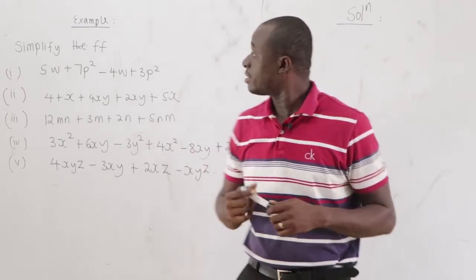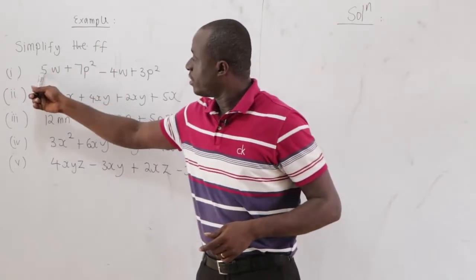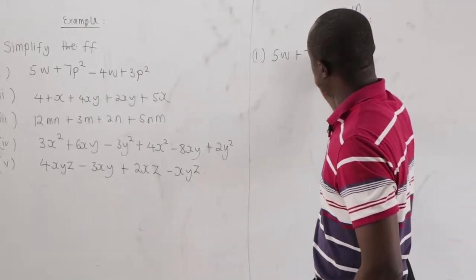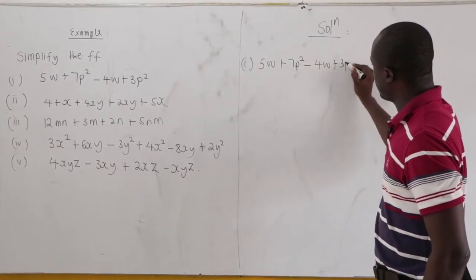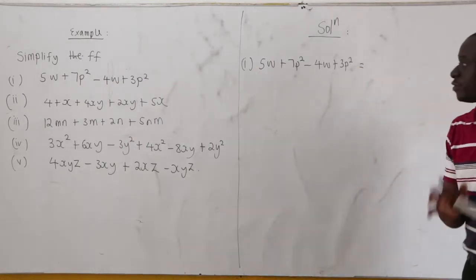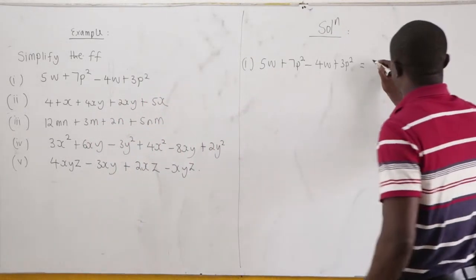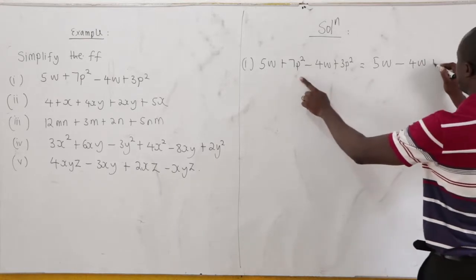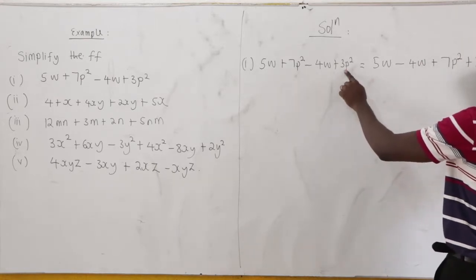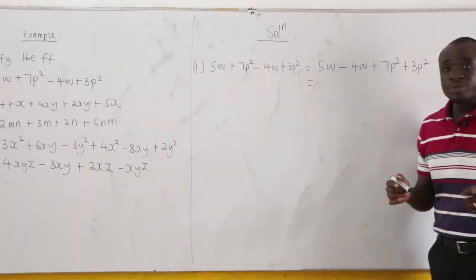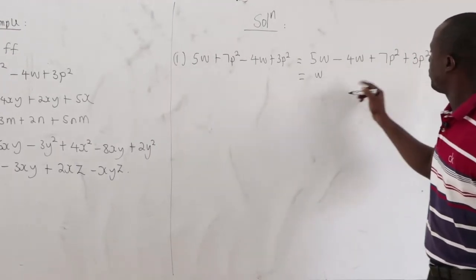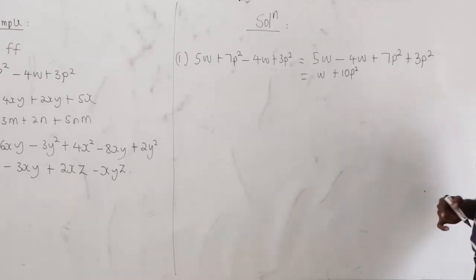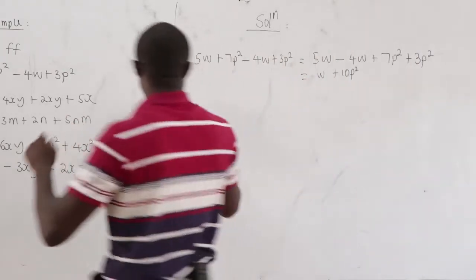Next example — simplify the following. Part i: 5w plus 7p squared minus 4w plus 3p squared. Group like terms: 5w minus 4w equals w. Then 7p squared plus 3p squared equals 10p squared. So the answer is w plus 10p squared.